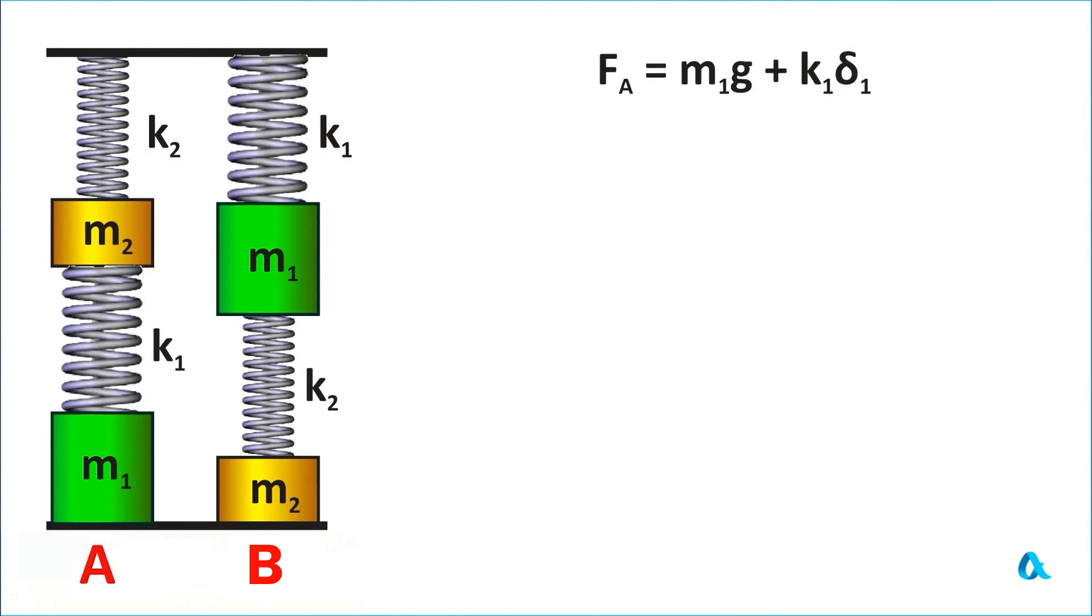To do this we will write the equilibrium condition for the upper weight. Its weight is equal to m2g and it is balanced by the difference of forces k1d1 and k2d2. We will also need a condition that is created by a fixed frame: the sum of the deformations of the springs d equal to d1 plus d2 remains the same in both situations A and B. We solve a system of two linear equations and find the deformation d1.